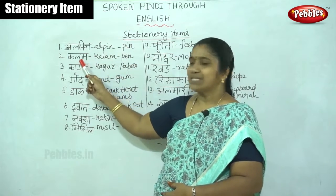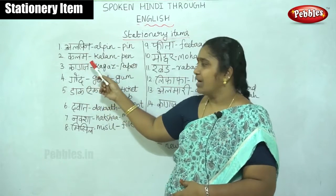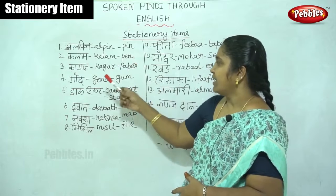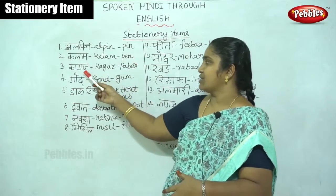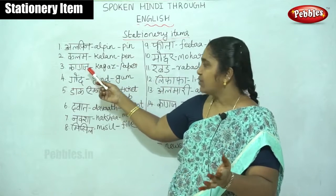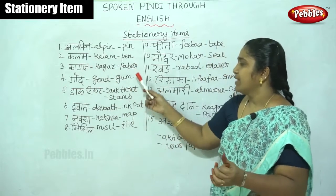Then the next one is kalam. You all know kalam. Kalam means pen. Then kahas — this also you all know. Kahas is paper.